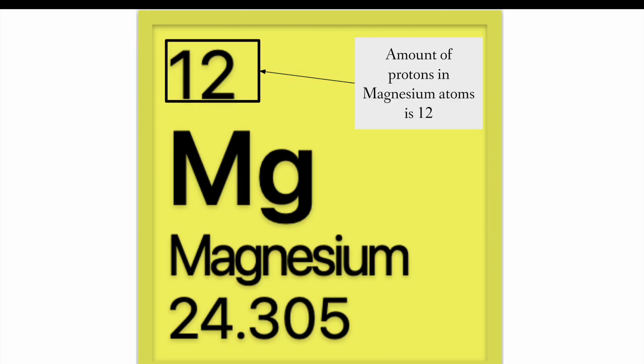Finally, and not finally because this is true for all of the atoms found on the periodic table, the amount of protons in magnesium atoms is 12. And this is also the atomic number of the atom because magnesium atoms will always have 12 protons.